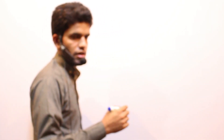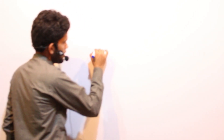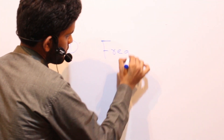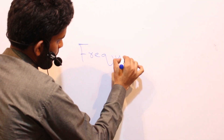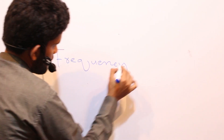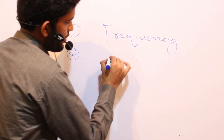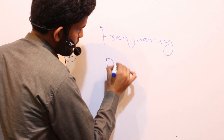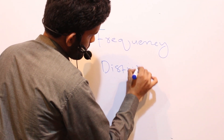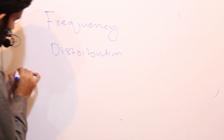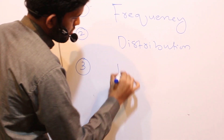When you study epidemiology, you will encounter many terms, but the most important and most commonly used terms in epidemiology are: the first is frequency, the second is distribution, and the third is determinants.